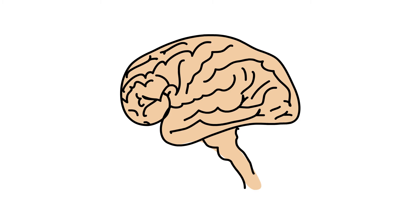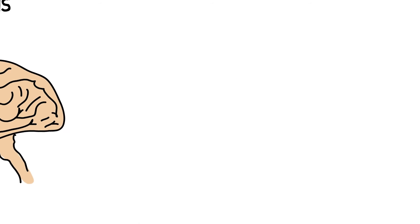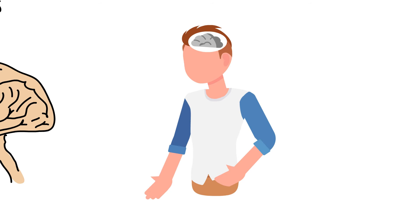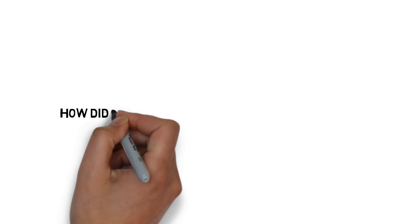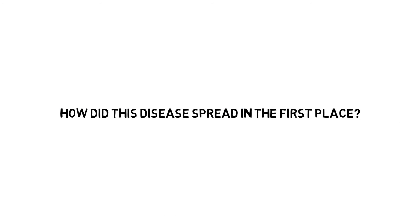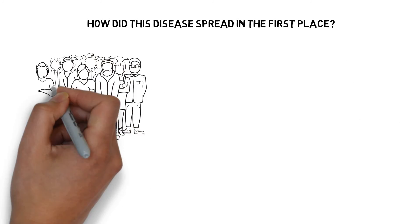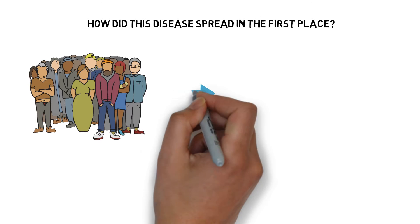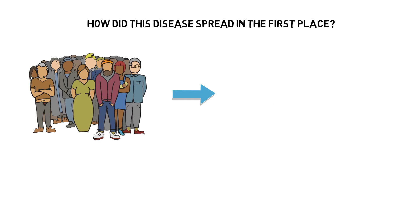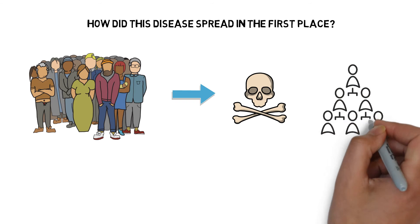Unfortunately, it is lethal, but the only possible way to acquire it these days is by, wait for it, eating the brains of an infected victim. Now, you must be confused. How did this disease spread in the first place? Well, prior to the 1950s, the Fore tribe's rituals involved consuming their dead in order to preserve their spirit, which often led to transmission of the disease.